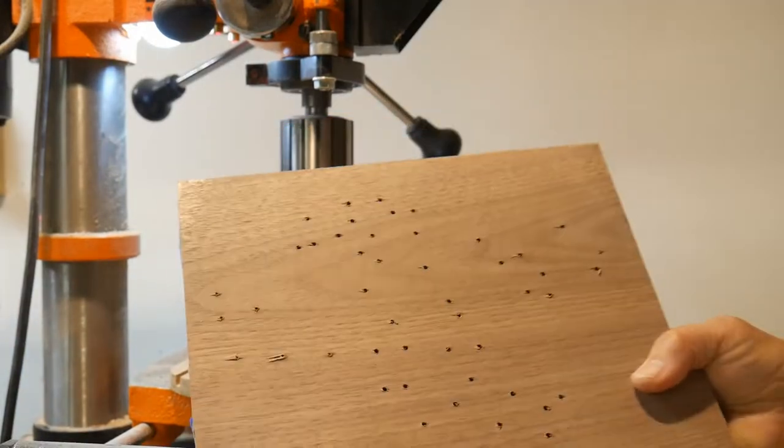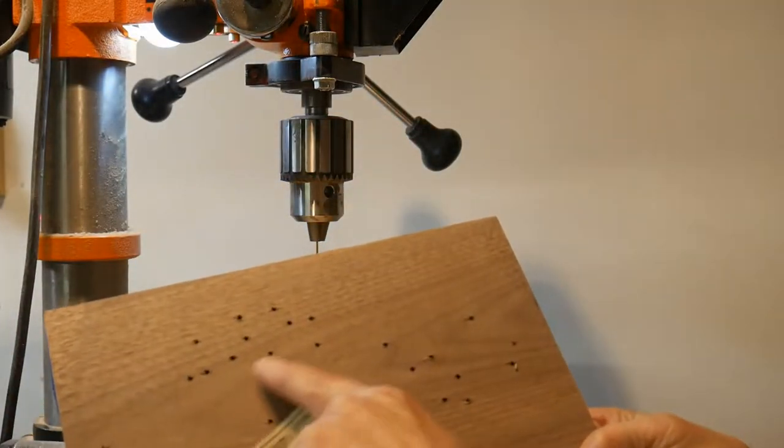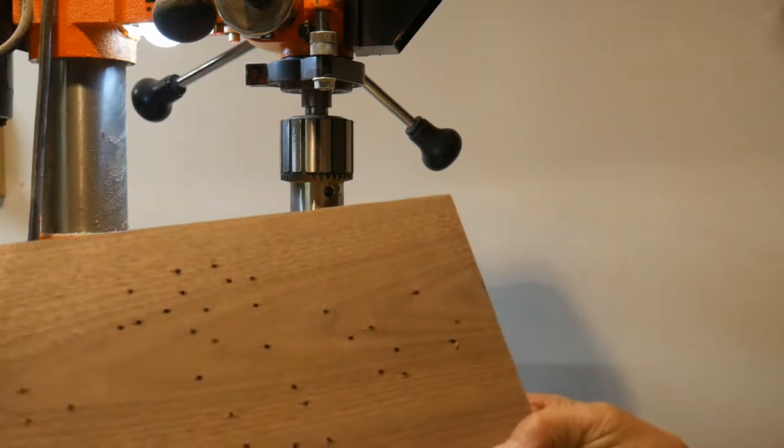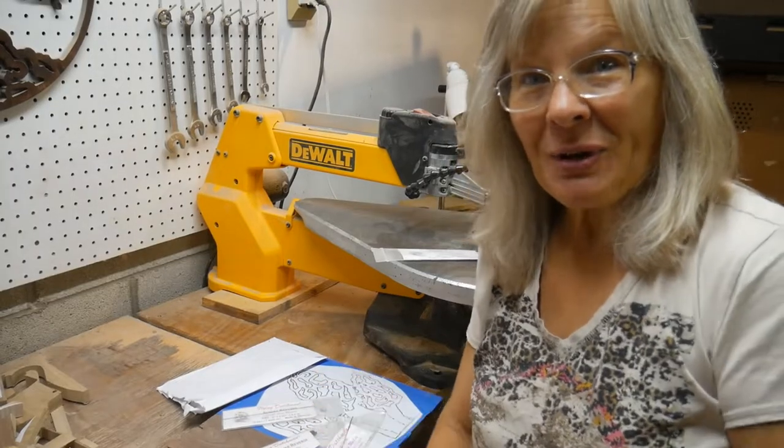After you've finished drilling all your holes, make sure you sand the bottom, so that it will lay nice and smooth on your scroll saw. You're at your scroll saw, and it's time for your scroll saw blade selection.